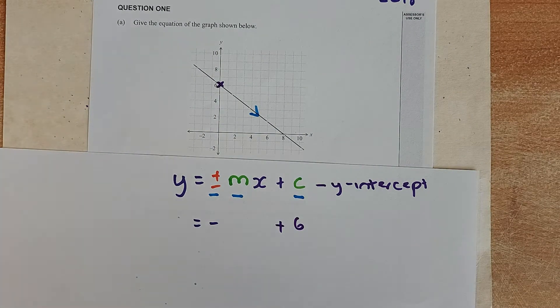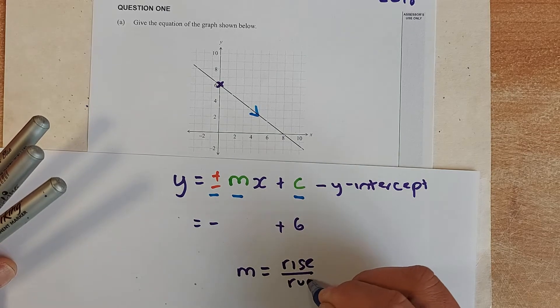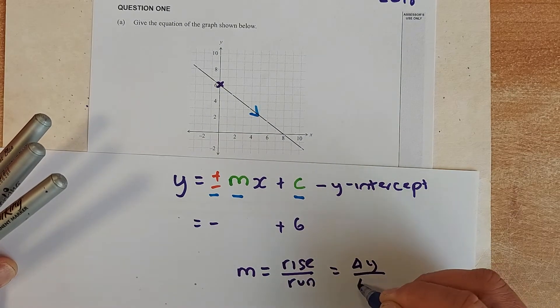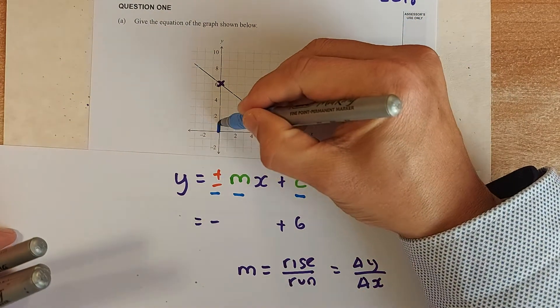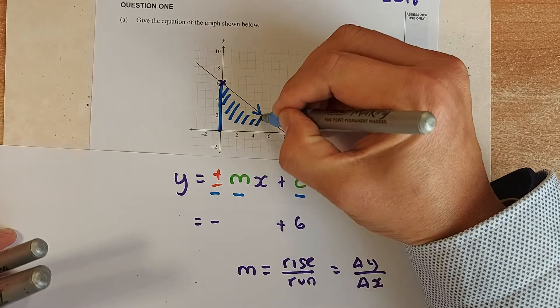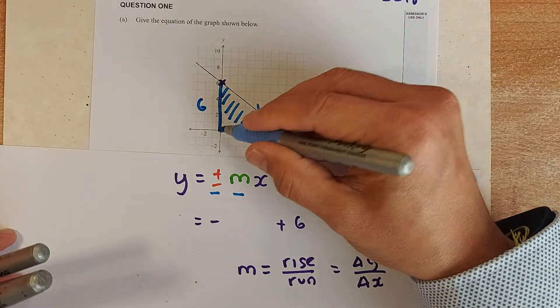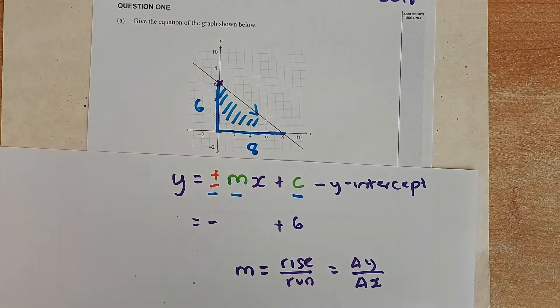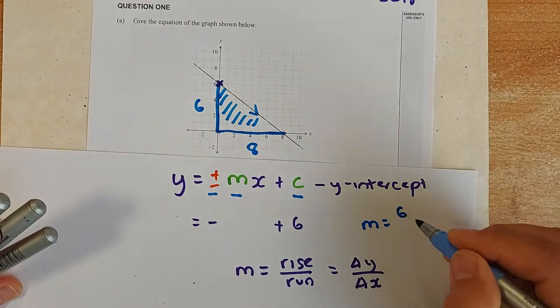So you have found two variables. Now we are going to find the third variable, the gradient. The gradient M is defined as rise over run, sometimes called the change in y over the change in x. So now if you find the rise, you are going to find a triangle in the graph. You are going to draw a triangle, that triangle there. And you can see the rise from 0 to 6 is 6, and 0 to 8, the run is going to be 8. So the gradient is going to be 6 the rise and the run is 8.